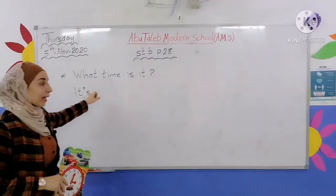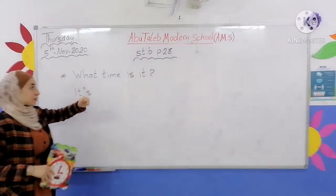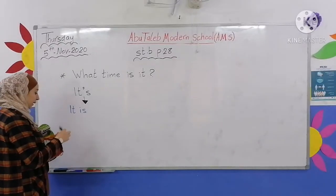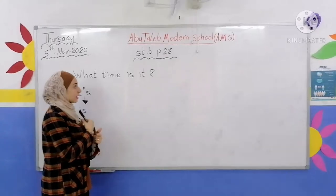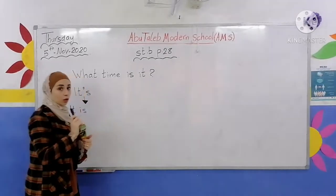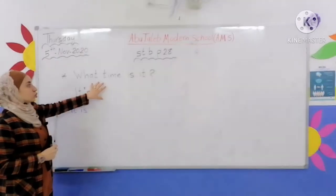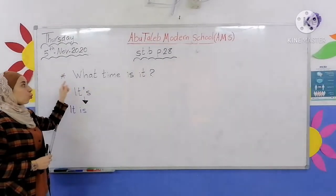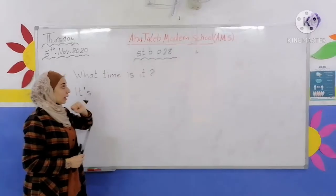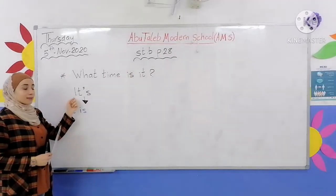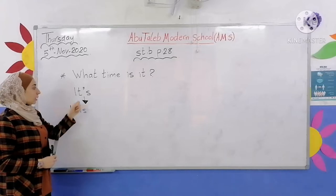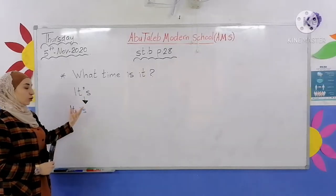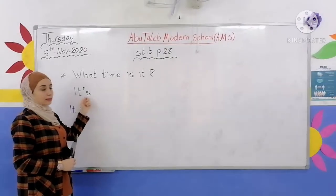What time is it? 'What' means ما or ماذا. 'Time' means الوقت. So: What time is it? This is the question. The answer — we say 'It's', which is the contraction of 'It is'. We say 'It's' because we are advanced. It's — okay.